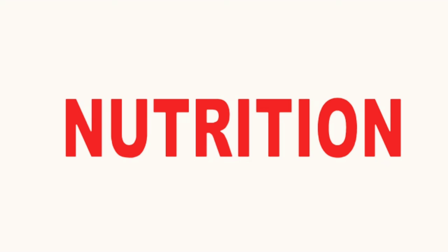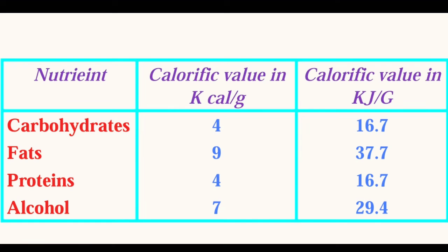After that, the nutritional conditions — under nutrition and over nutrition — and the significance of the balanced diet. Now coming to calorie and calorific value. First, what is calorie? The energy content of food is expressed in the form of calories. Calorie can be defined as the amount of heat required to raise the temperature of one gram of water through one degree centigrade.